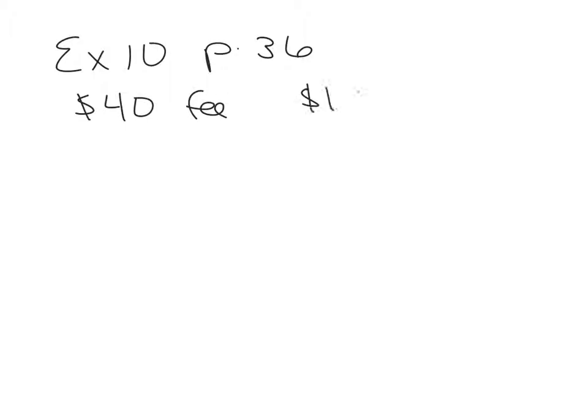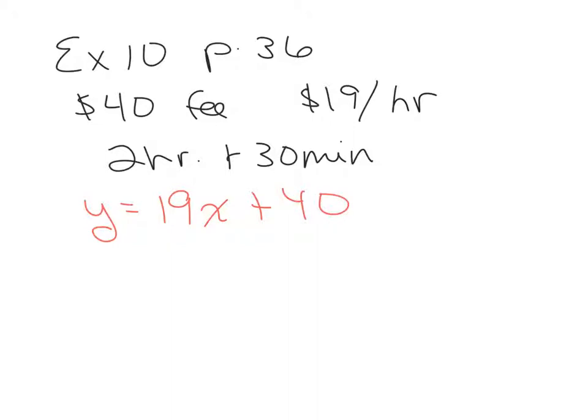$40 plus $19 per hour to set up the service. It took the cable man two hours to set up. Oh, two hours and 30 minutes. I'm sorry. Two hours and 30 minutes to set up the cable. How much was charged for Allen and Doris' account? All right, let's write the equation first, just like we did before. The total amount of money will be the amount charged per hour, and that's this, 19, and X represents the number of hours, plus the one-time fee of 40.